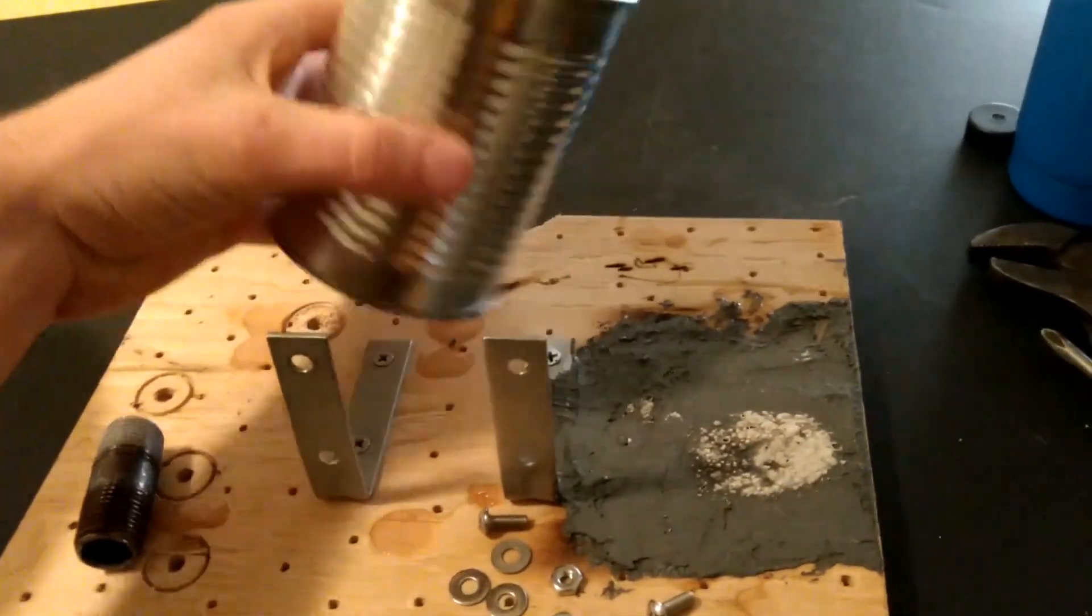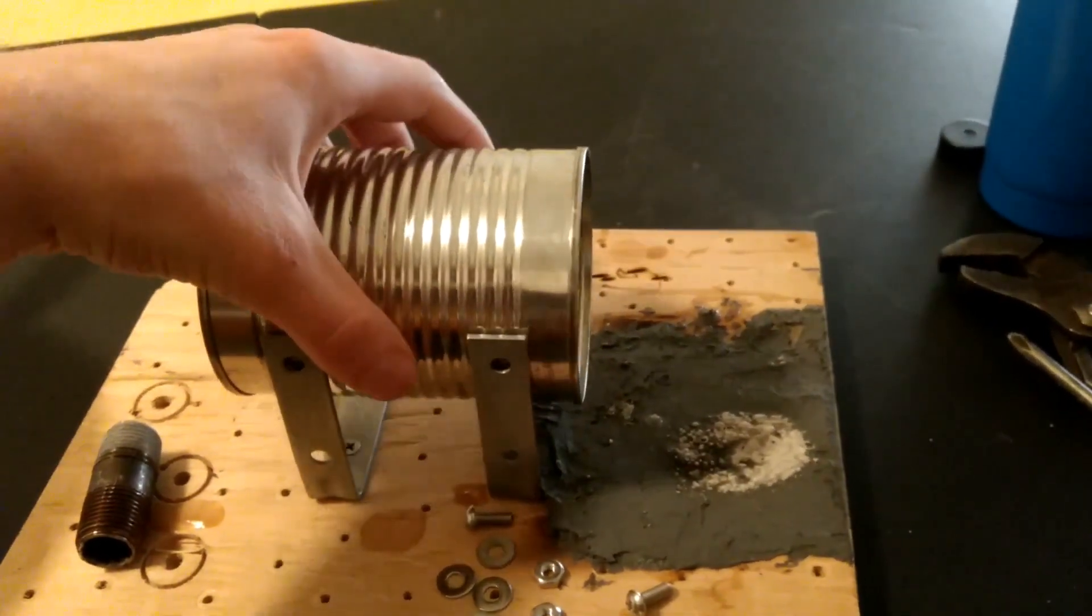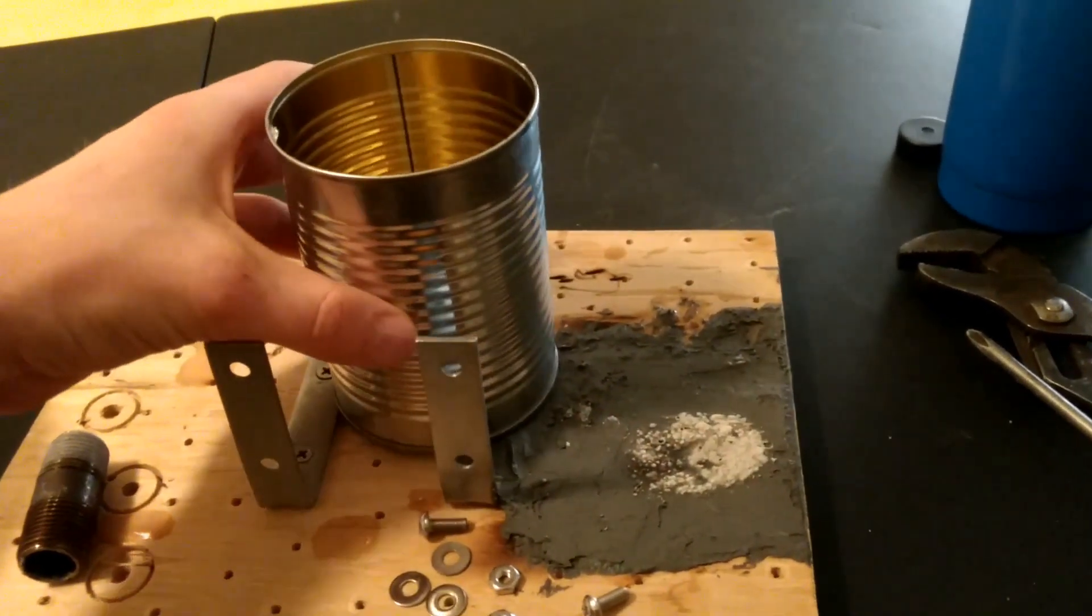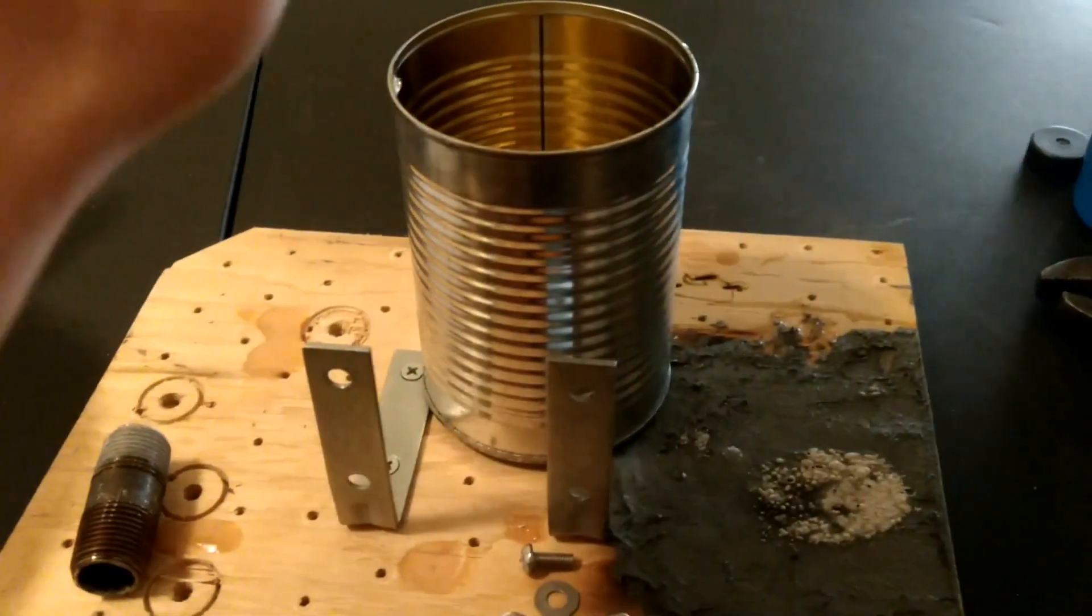So the next step is going to be to punch out the marking holes in the side of this can, punch out a hole for the pipe nipple to go through, put those in, then I'm going to mix up the plaster and pour it on in.